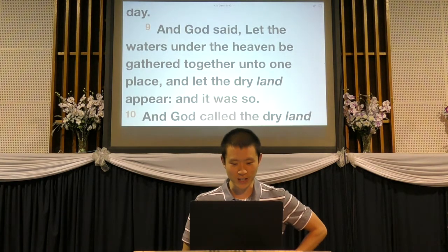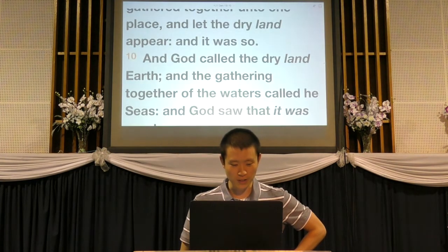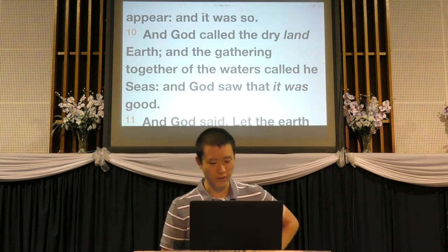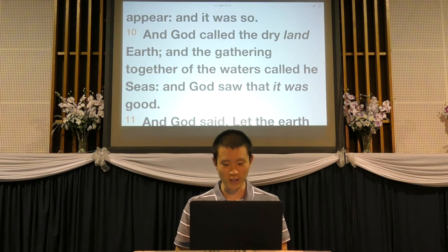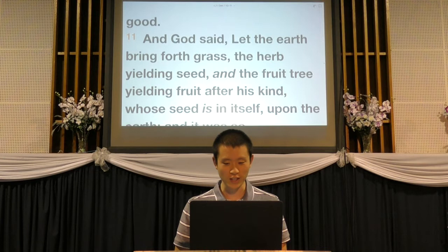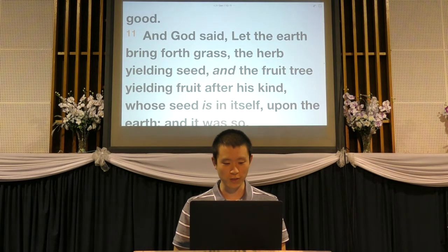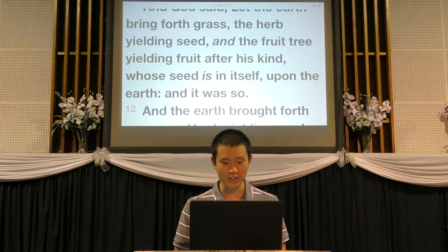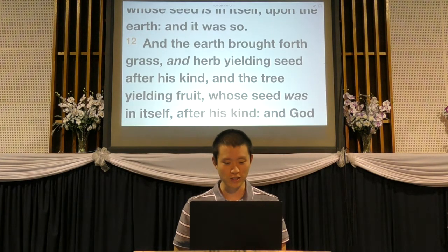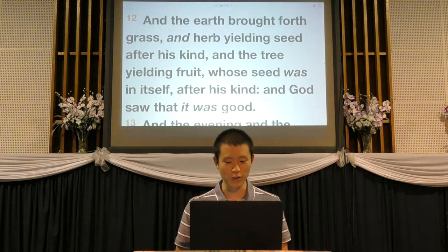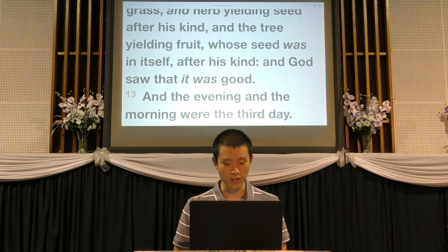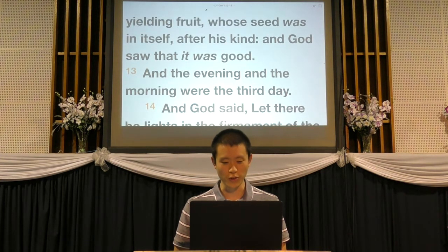This is the third day - God is creating the dry land and the seas. "And God said, Let the earth bring forth grass, the herb yielding seed, and the fruit tree yielding fruit after his kind, whose seed is in itself upon the earth, and it was so. And the earth brought forth grass and herb yielding seed after his kind, and the tree yielding fruit whose seed was in itself after his kind, and God saw that it was good."